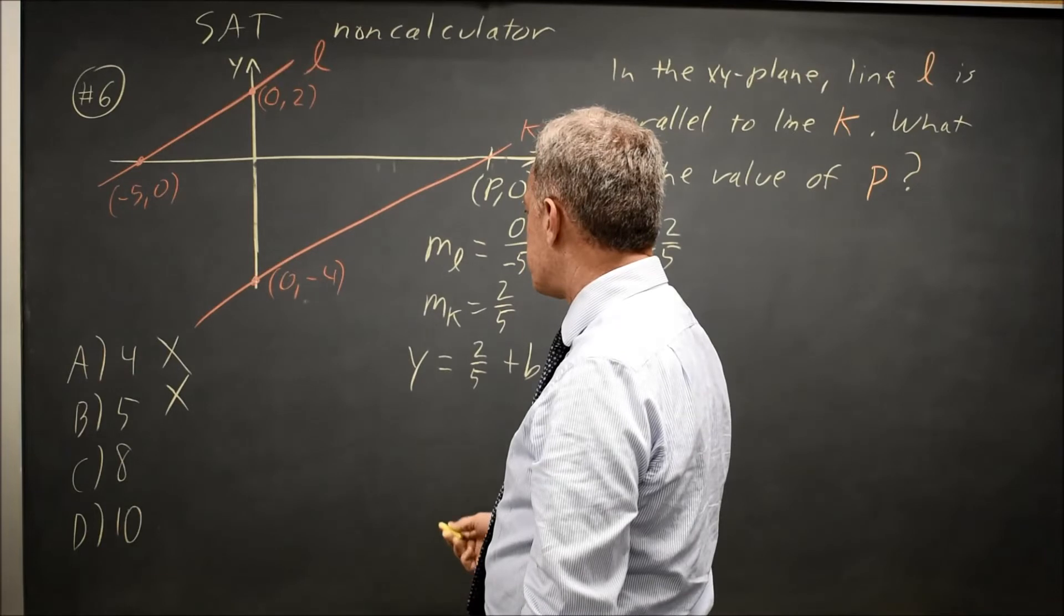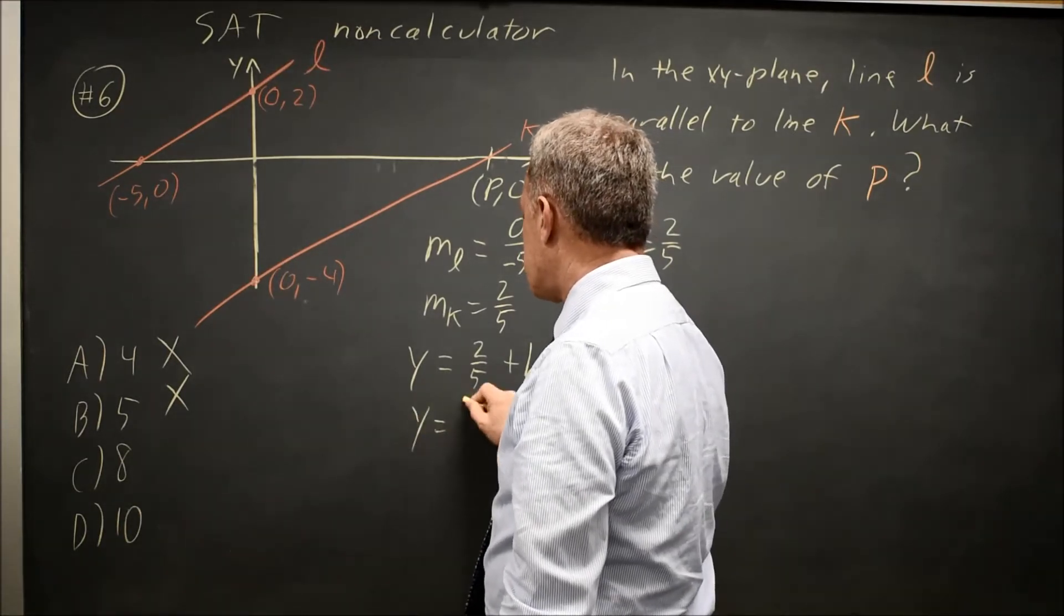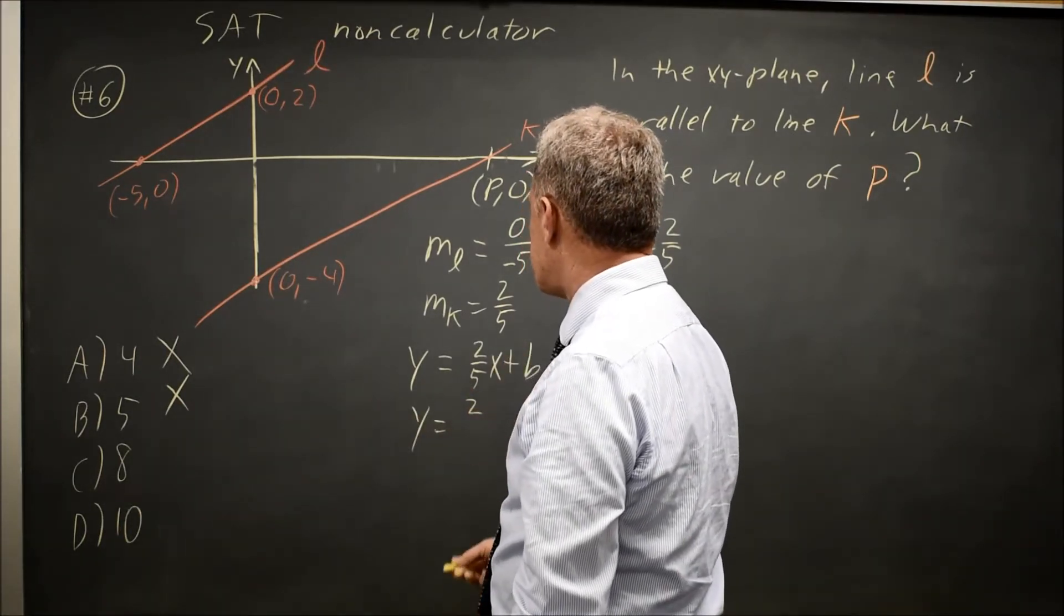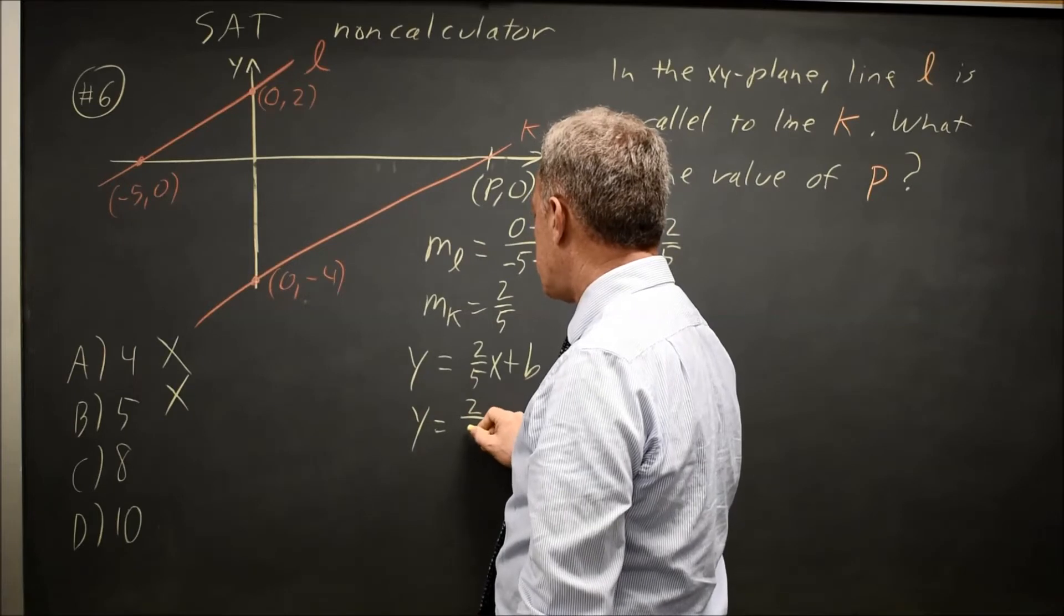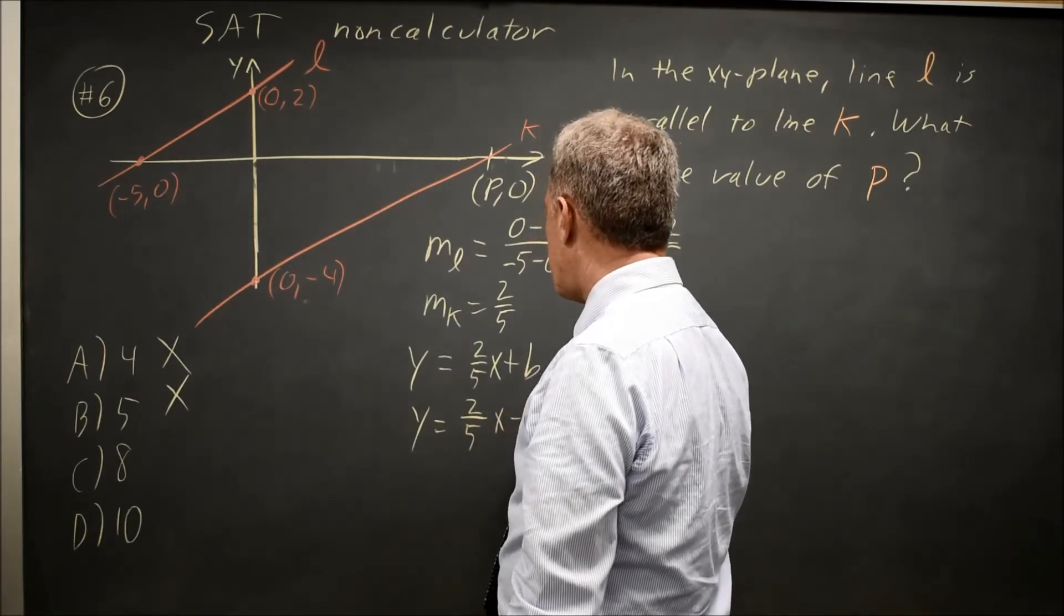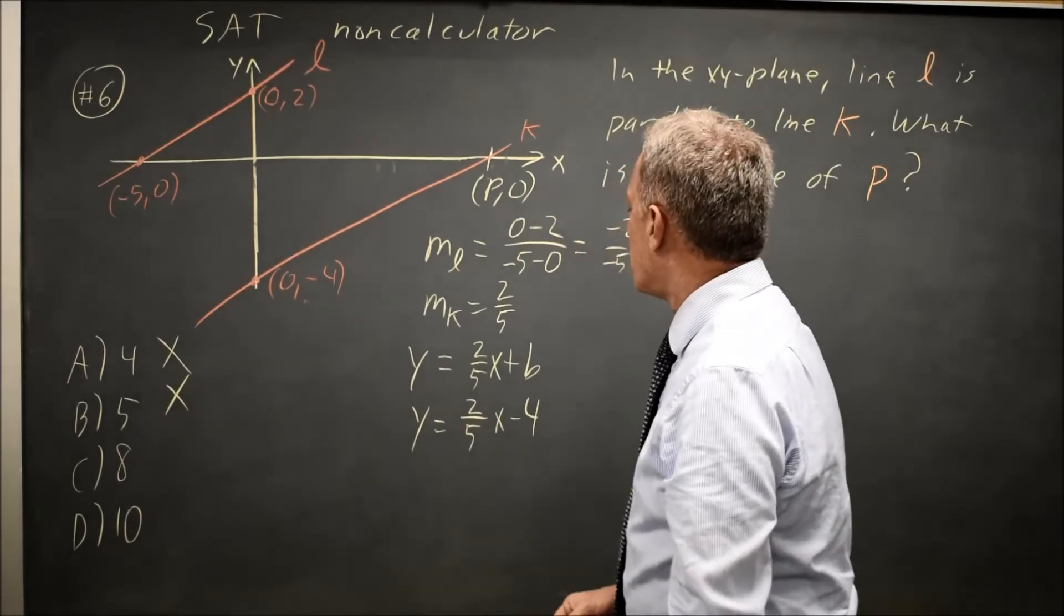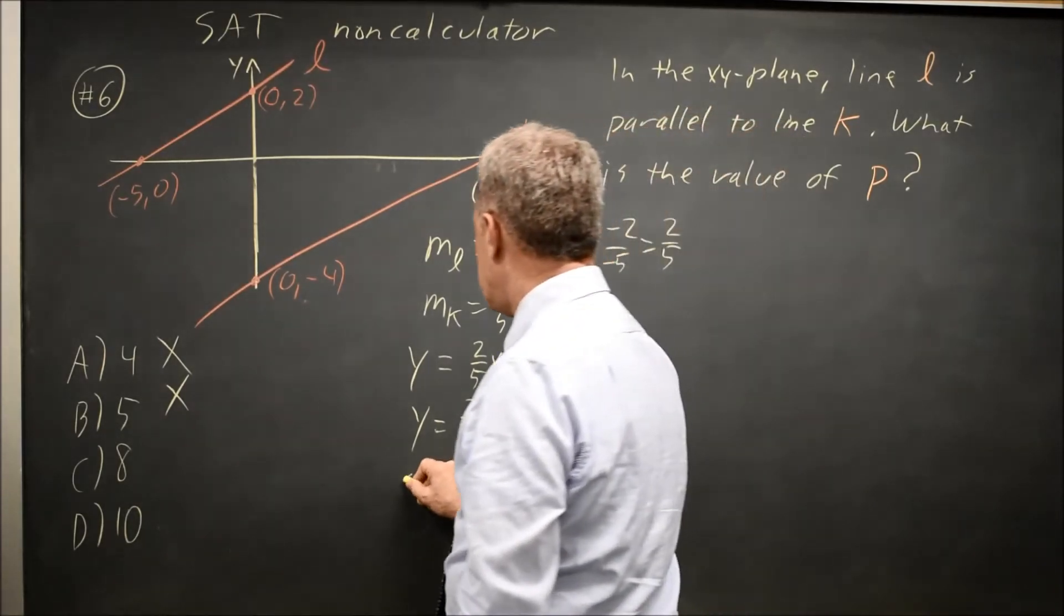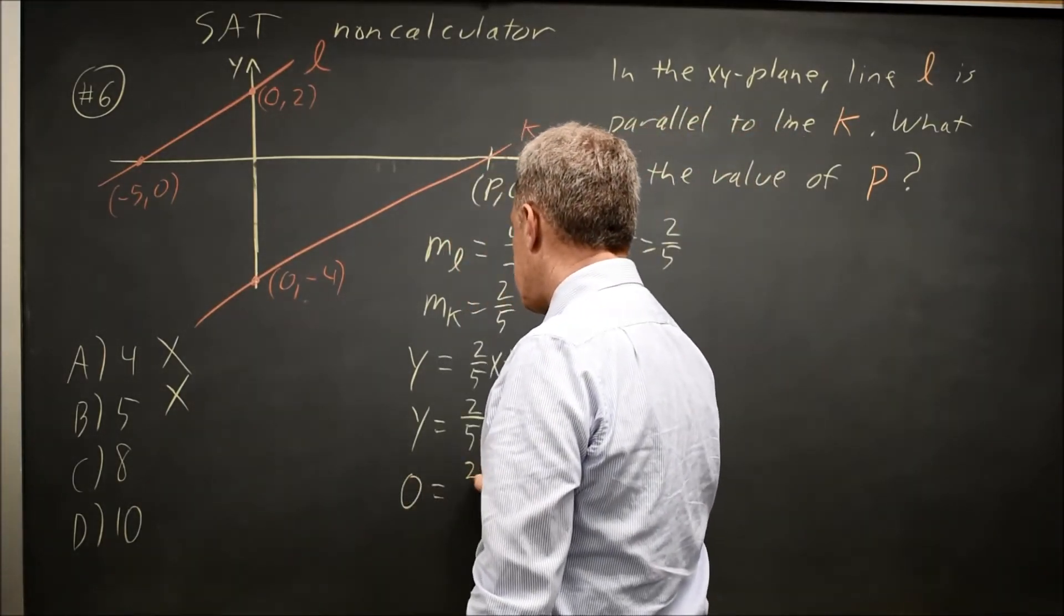I have the y-intercept, and the y-coordinate of the y-intercept is b, so y equals 2 fifths x plus b. So y equals 2 fifths x minus 4, and the y value is 0 when the x value is p.